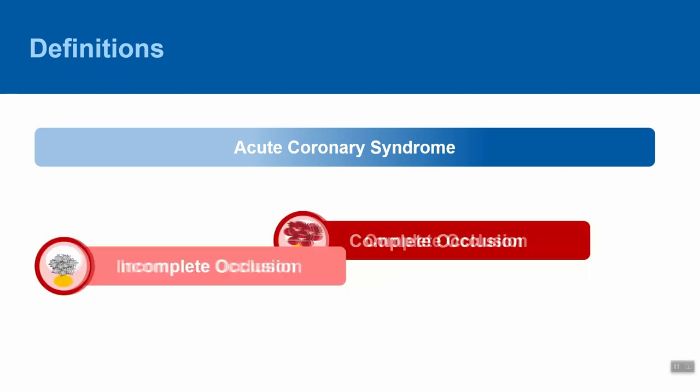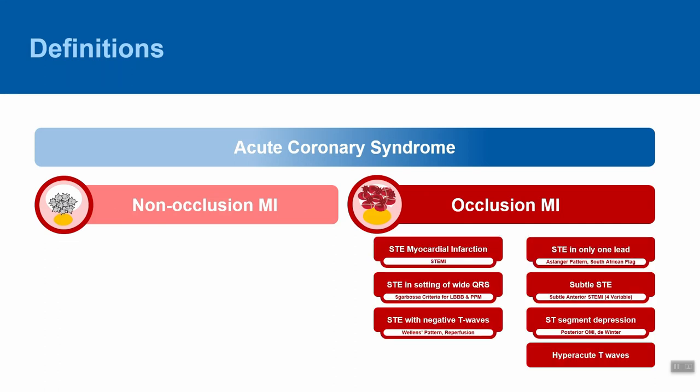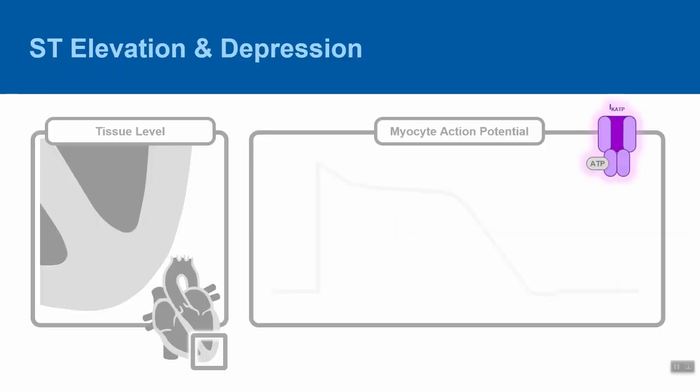Proponents of the OMI-NOMI paradigm prefer to put the presumed underlying pathology at the top of their schema, rather than a single segment of the ECG. They then look for ECG findings associated with high specificity for acute coronary occlusion. This does not ignore ST segment elevation, but expands beyond it to capture the subset of NSTEMIs that have total coronary artery occlusion. Proponents of the STEMI-NSTEMI paradigm will argue that it is a physiologic paradigm — reminding us that it all comes down to the K-ATP channel.